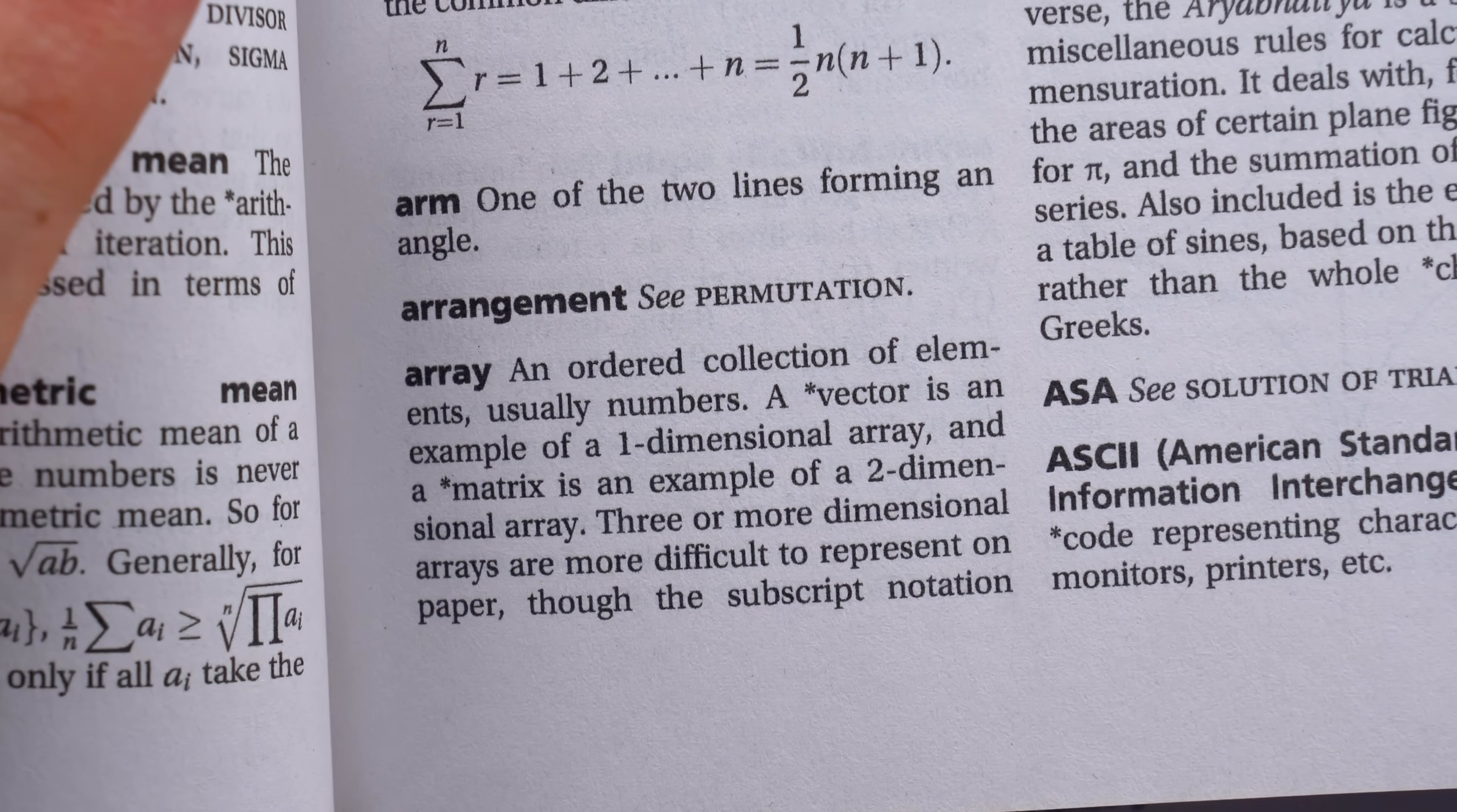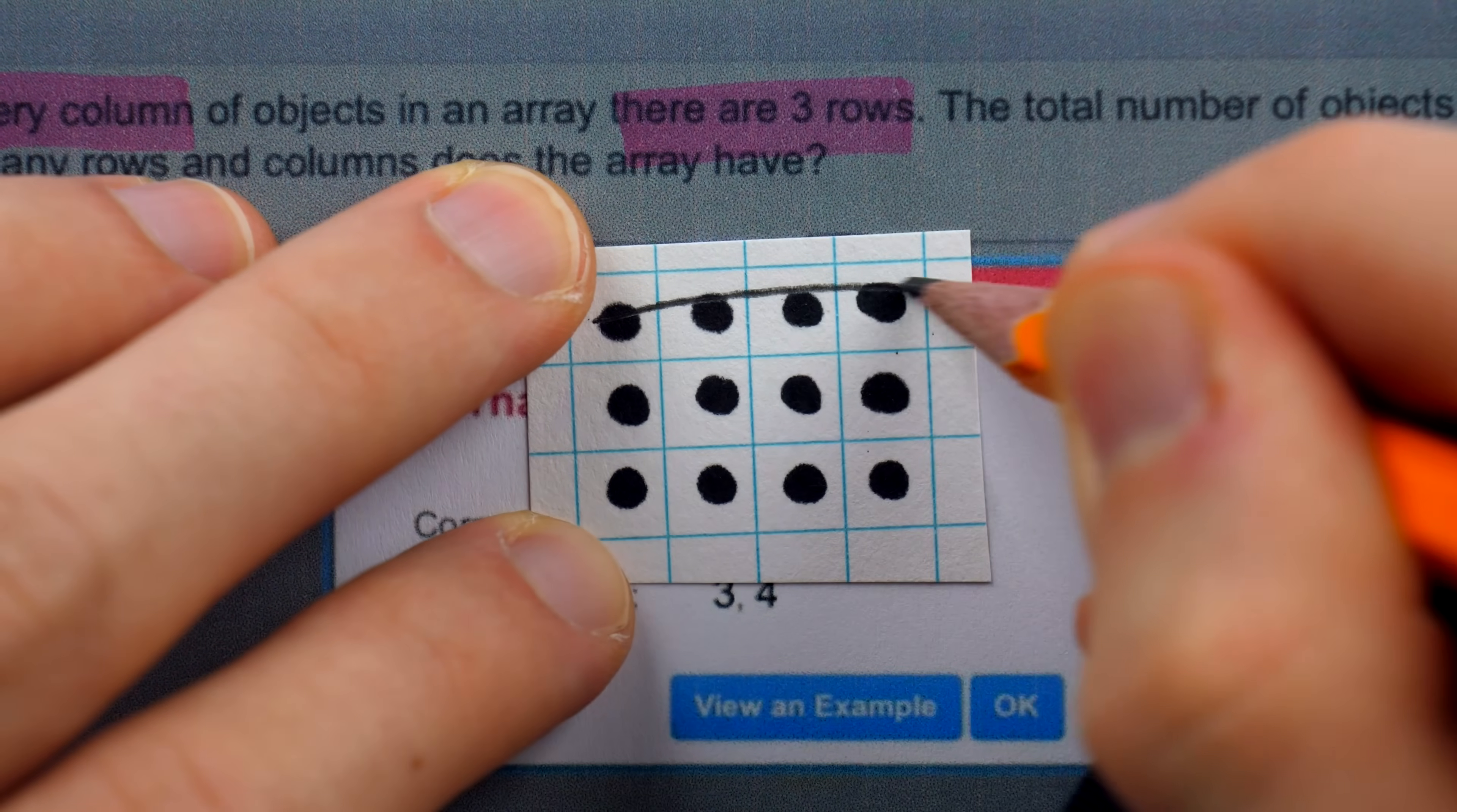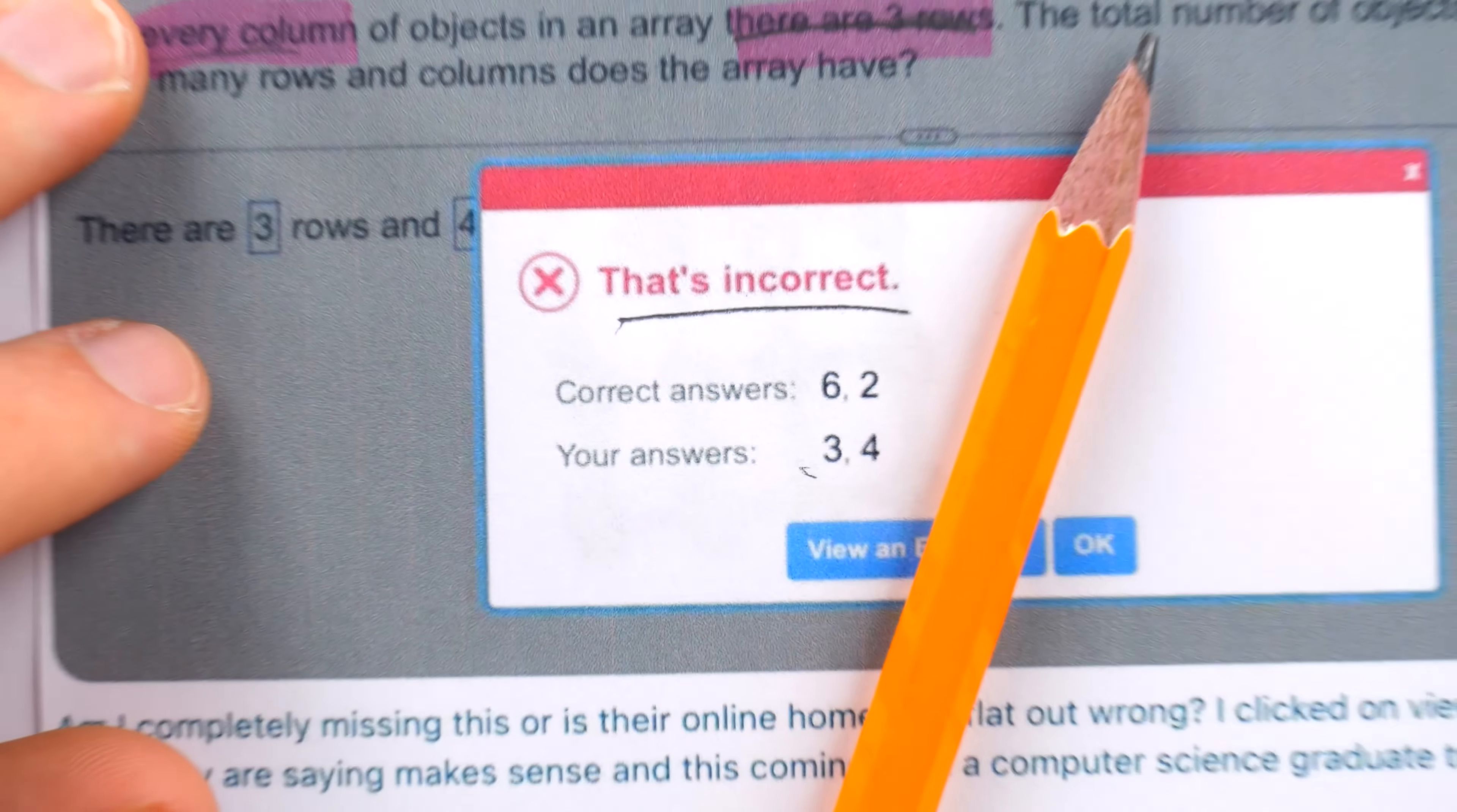Why don't we try a more modern mathematics dictionary? An array, an ordered collection of elements, usually numbers. A matrix is an example of a two-dimensional array. So yeah, I think for our purposes, an array is just a rectangle filled with numbers or other things. And one of these rectangular arrays is made up of rows and columns. The problem says there are three rows, just like this. Every column here has three rows. And you want to tell me that three rows is incorrect? What has this cold world come to?